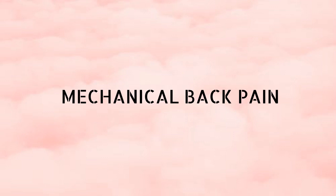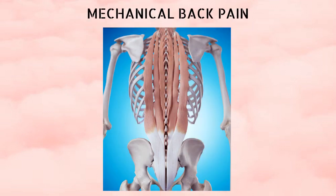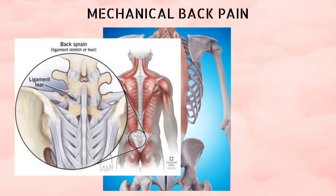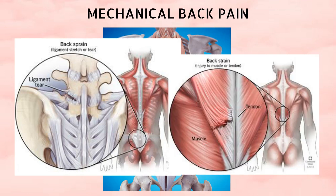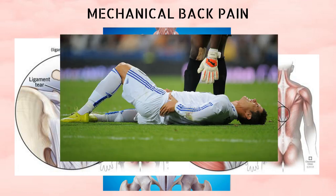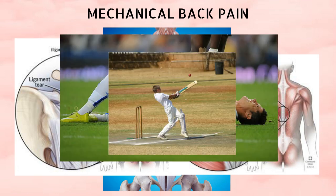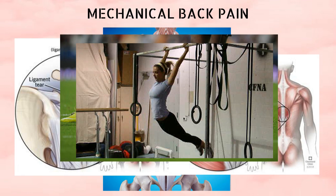Mechanical back pain commonly starts because of problems in the muscles of the back — sprains or tears in the muscles. This is more commonly seen in adults over the age of 30 years who are actively involved in sports like football, cricket, or crossfit, as these sports contribute to lots of load on the low back region leading to muscle sprains.